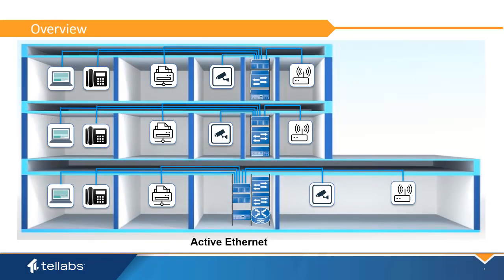In a traditional active Ethernet LAN, a router in the core layer links to the campus or building aggregation switches or distribution layer. The distribution switches connect down to the access layer switches in the IDF closets. Copper cables extend from the IDF to the network clients and end devices.